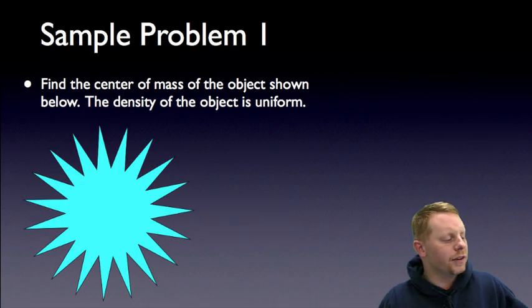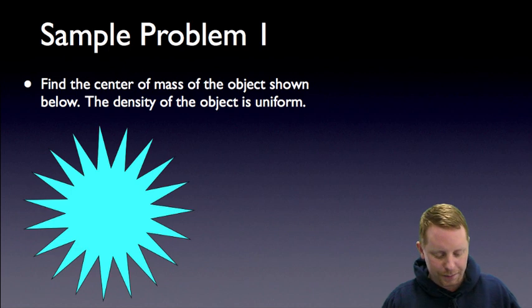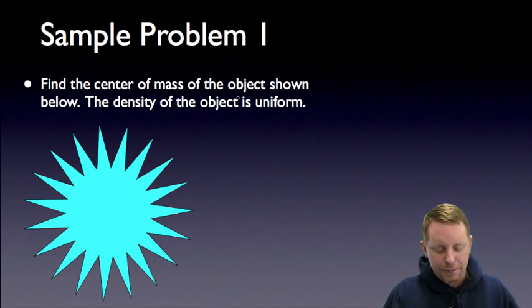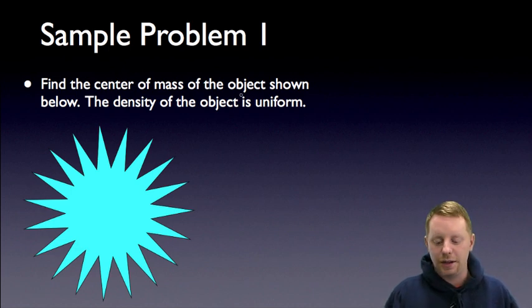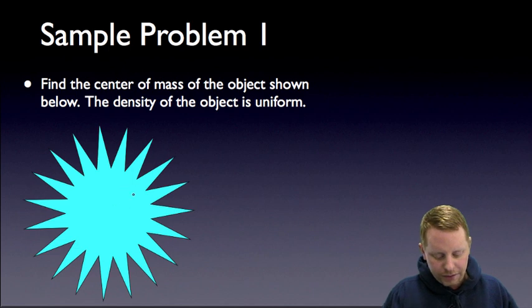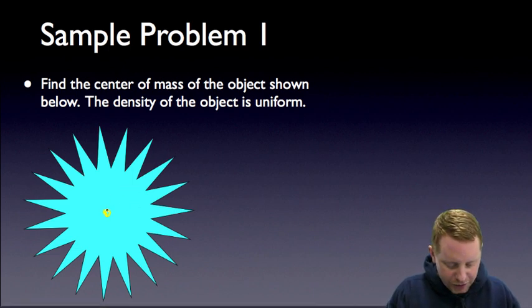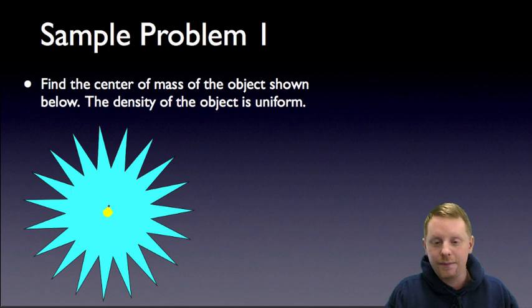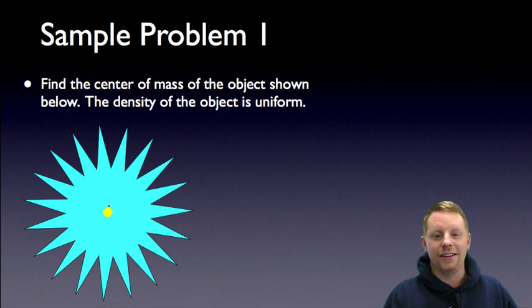Let's take a look at a sample problem: find the center of mass of the object shown below. The density of the object is uniform. Since it's symmetric and has uniform density, by inspection we can see that the center of mass is right there in the center.